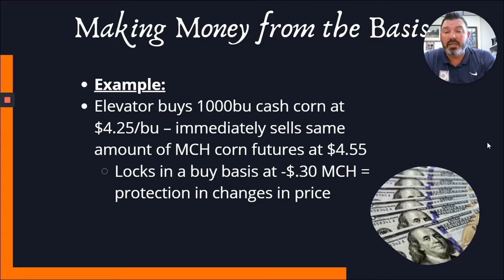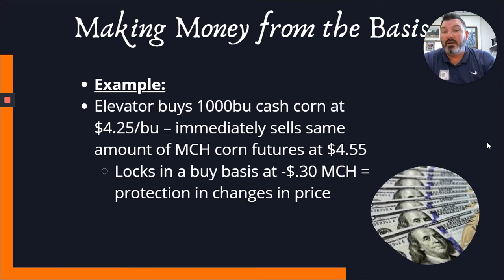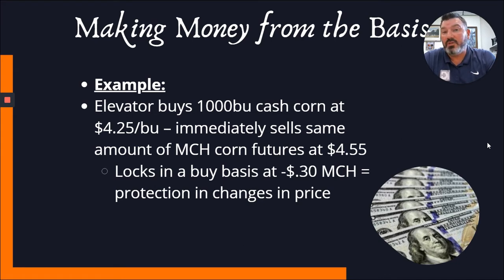So how do you make money off the basis? If an elevator buys 1,000 bushels of cash corn at $4.25 and immediately sells the same amount of March corn futures at $4.55, that locks in a basis spread of $0.30 per bushel on that thousand bushels of corn. It kind of gives protection for changes in price over time, and you can see how that local elevator may try to utilize the bushels coming in to create a little bit of profit margin for themselves.